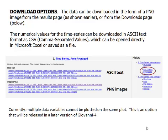Currently, multiple data variables cannot be plotted on the same plot. This is an option that will be released in a later version of Giovanni 4.